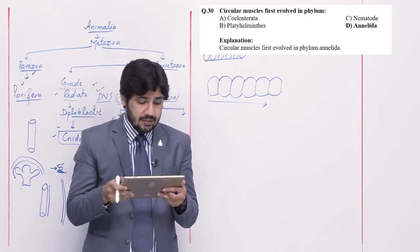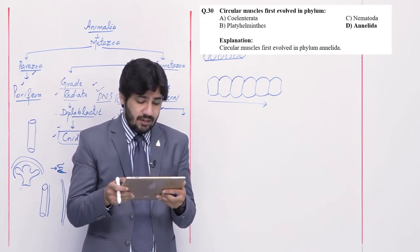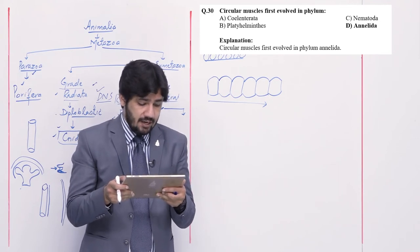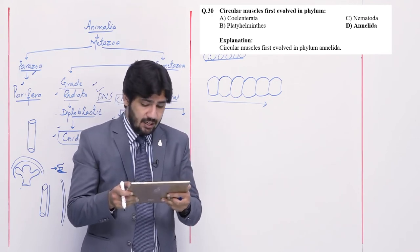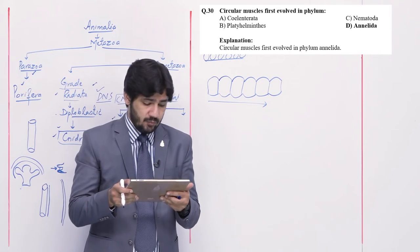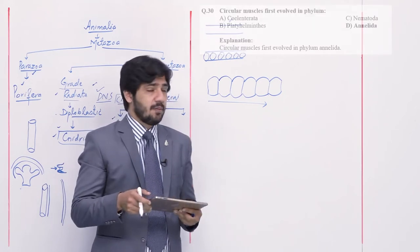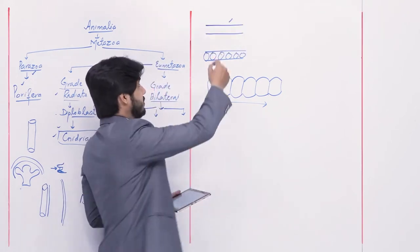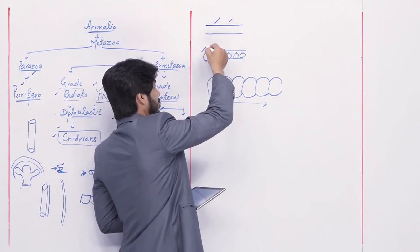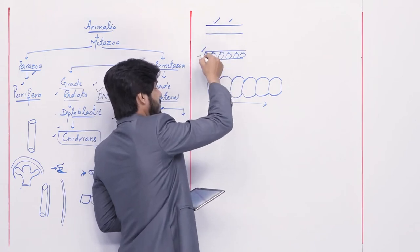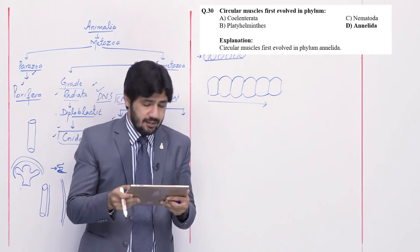Question number 30: circular muscles first evolved in phylum — alpha Cnidaria, beta Platyhelminthes, charlie Nematoda, and delta Annelida. Before annelids, only longitudinal muscles existed. In annelids, both longitudinal and circular muscles are present. Right option is delta — Annelida.